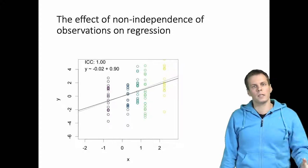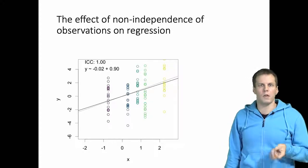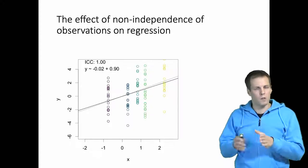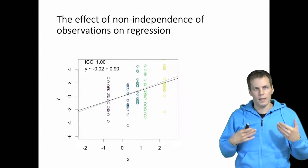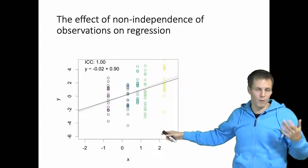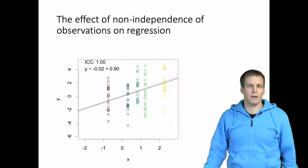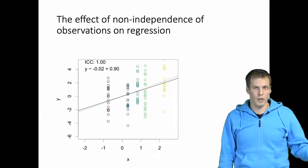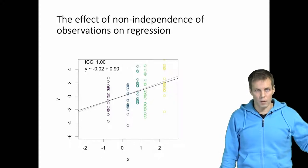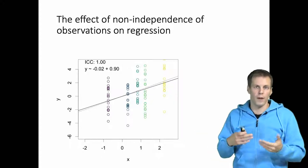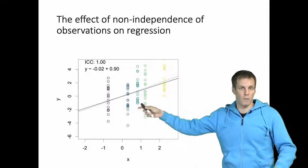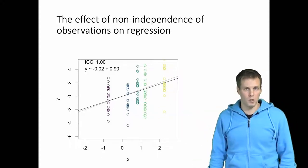The reason is that regression analysis doesn't make any assumptions about the independent variable. Everything is estimated conditionally on the observed values of X. For example, in an experimental context, we actually assign people to the treatment group and the control group, so those X values are not random variables — they are set by the researcher — and regression analysis would not be affected.